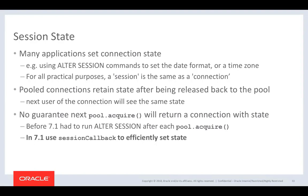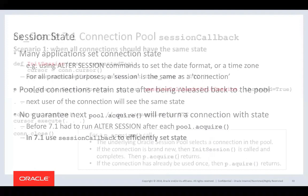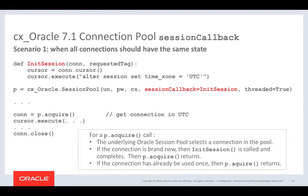In 7.1 we have a new session callback mode option to improve scalability. You now pass a function name as the session callback when creating the pool, and this function can set any particular state on the connection. You would use this model if you wanted all connections from the pool to have the same state — for example, a time zone of UTC.